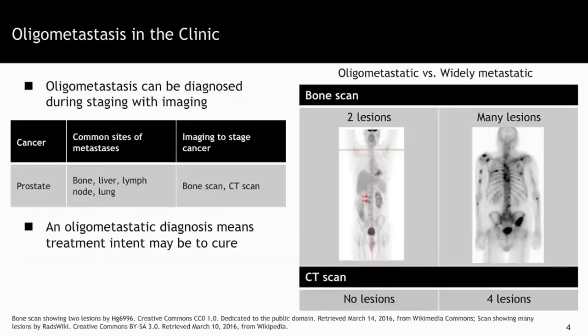As mentioned earlier, increasingly more patients are being designated as oligometastatic due to better imaging and more treatment options. This is very exciting in the clinic because it raises the possibility that maybe more patients than we thought before with metastatic cancer can be curable. In the clinic, oligometastasis can be diagnosed during the regular staging that would be done with imaging.